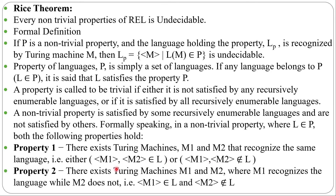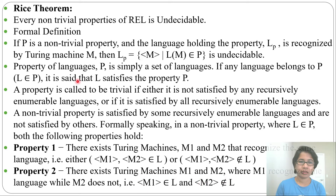Second property: there exist Turing machines M1 and M2 where M1 recognizes the language while M2 does not. For example, some languages can accept emptiness and some will not; some languages can accept finiteness and some will not. This is what makes it a non-trivial property.